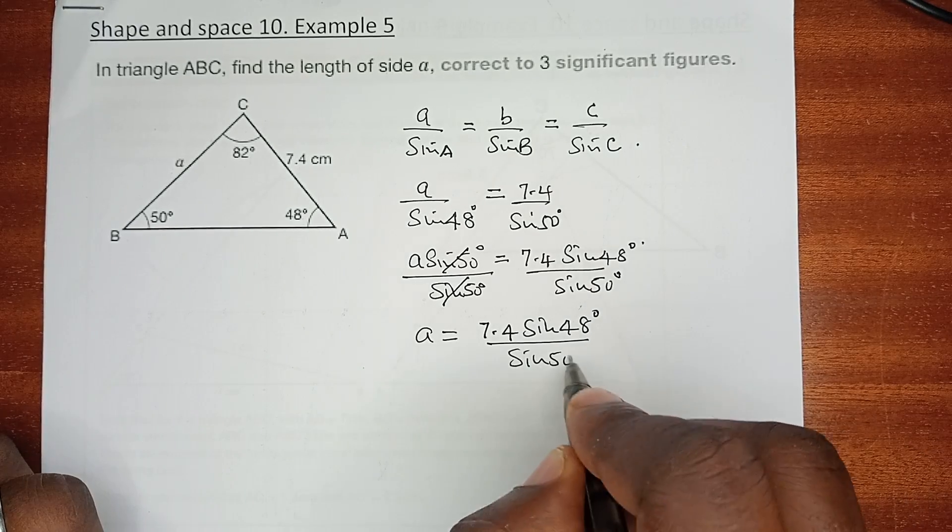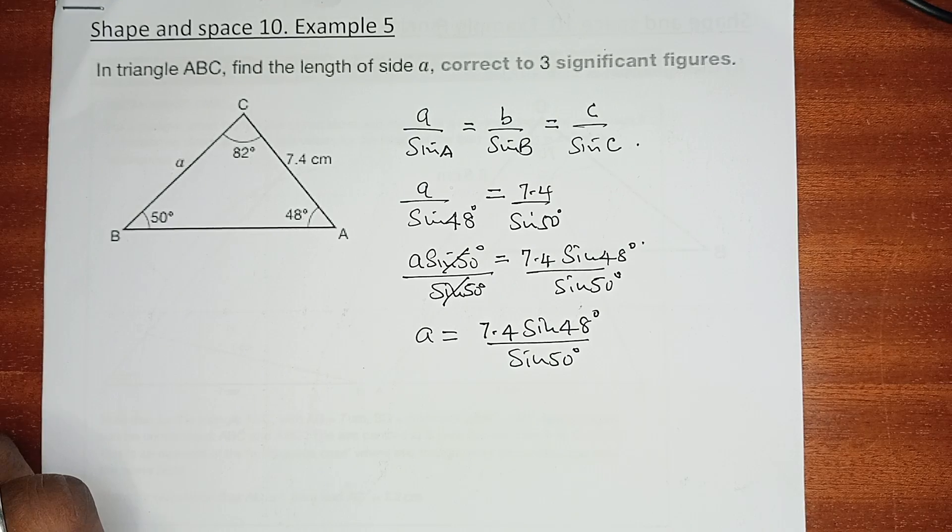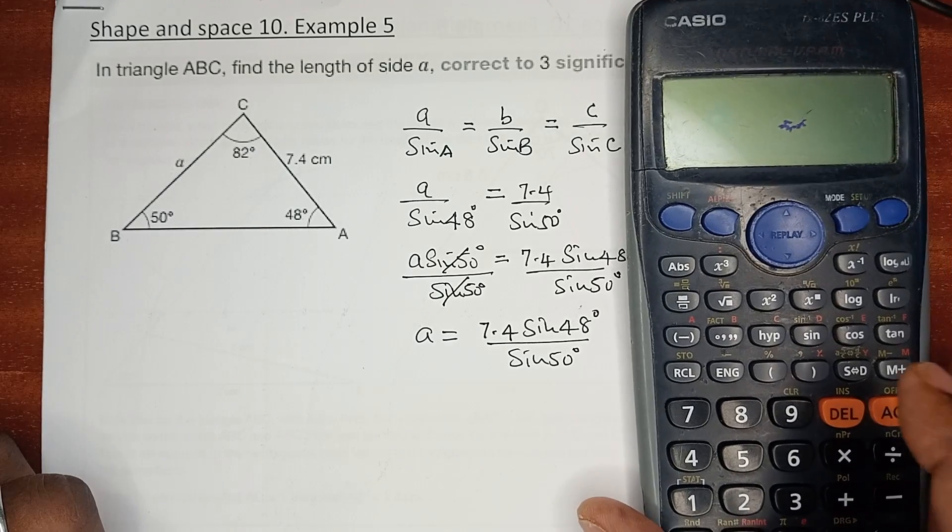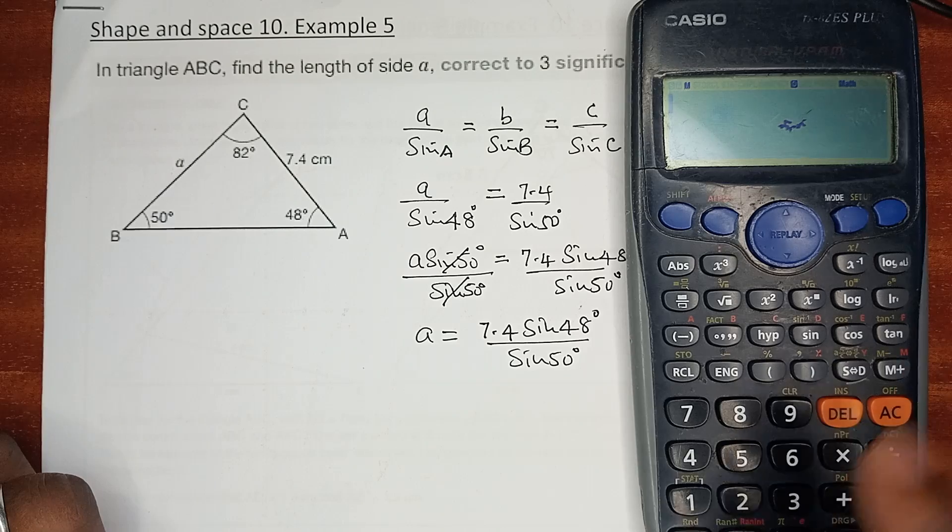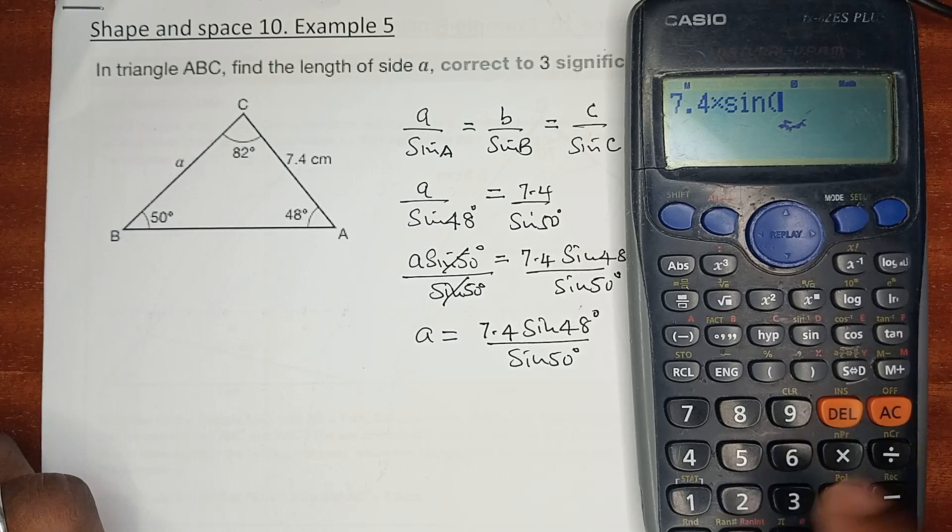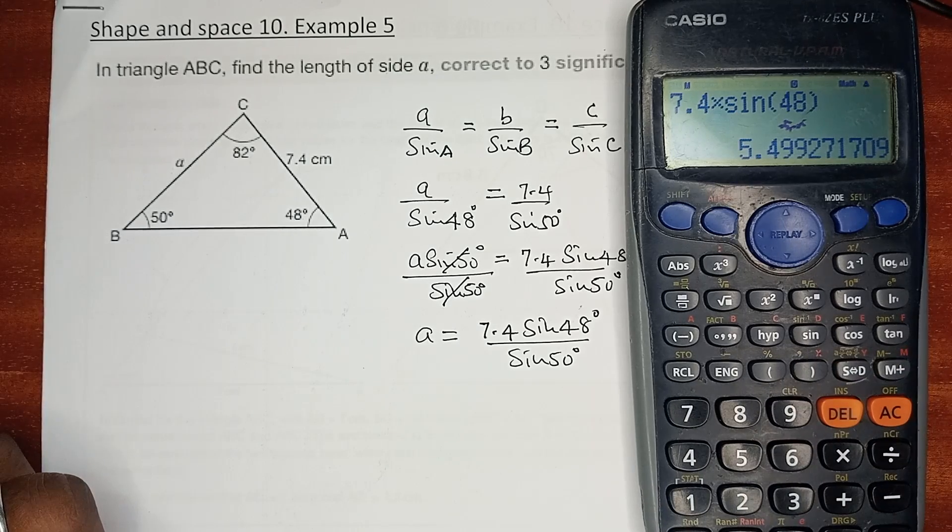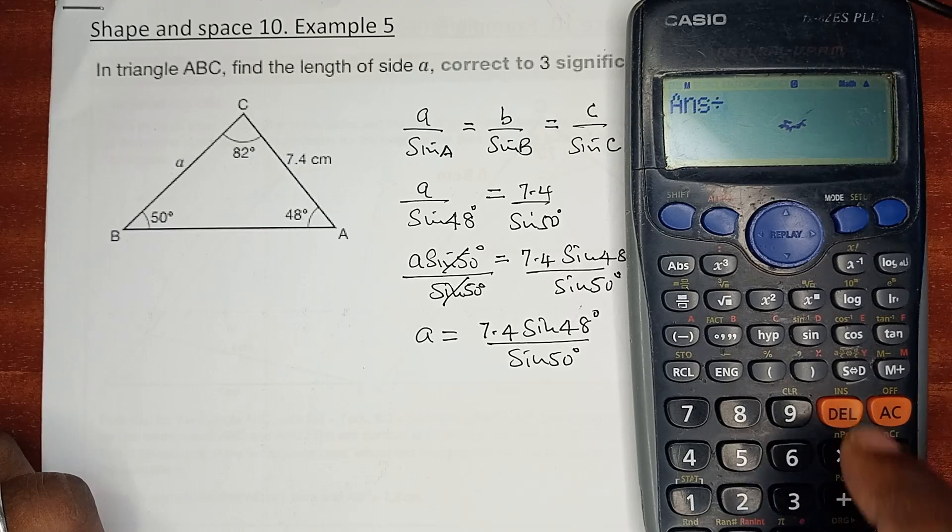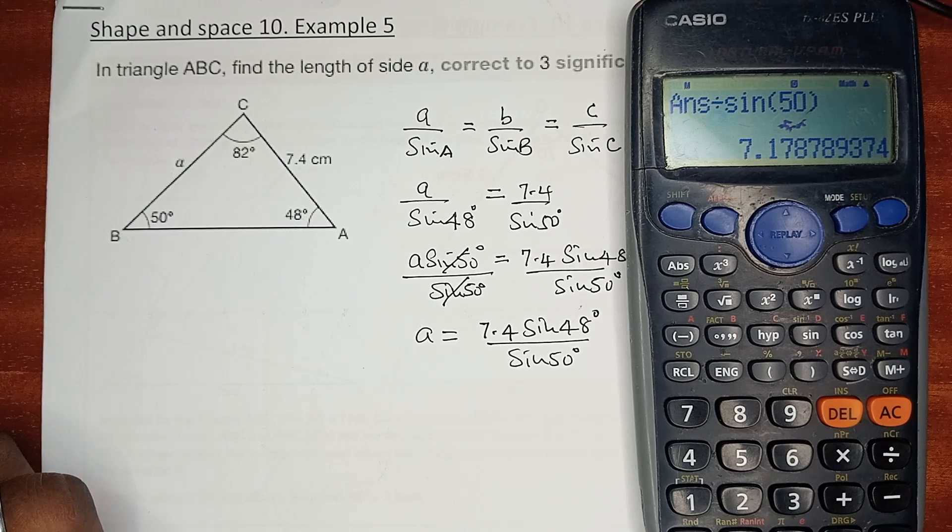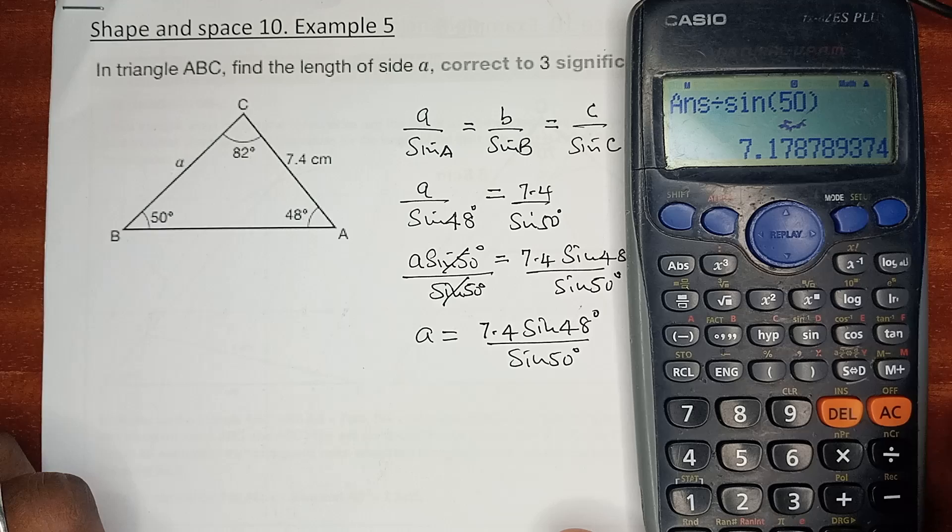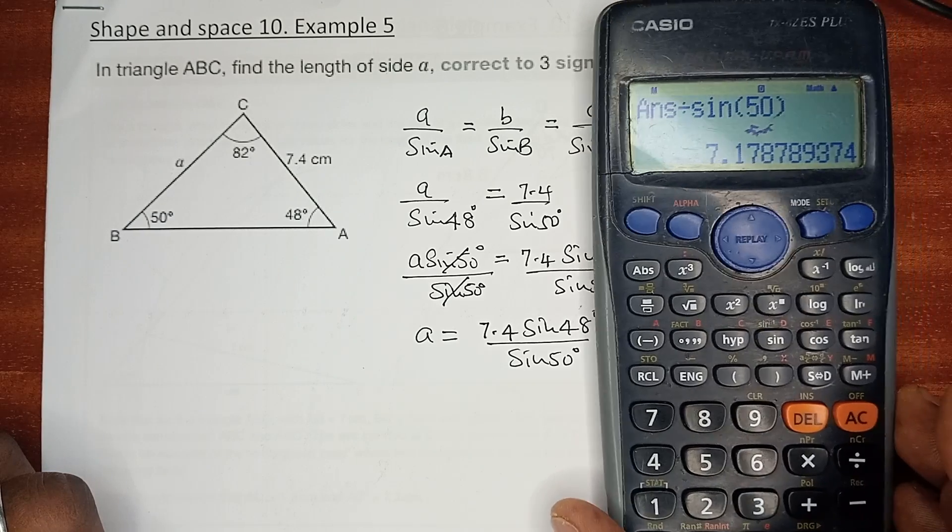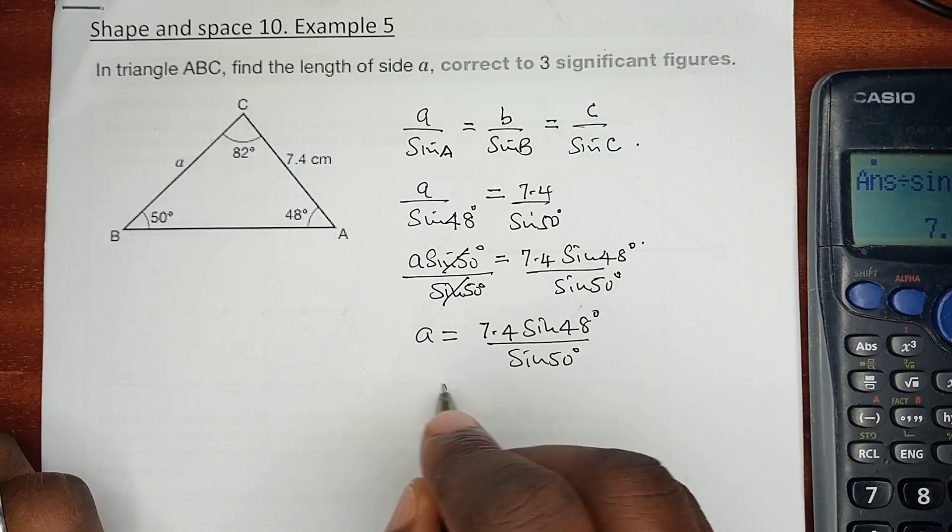At that point we just want to employ the calculator and see what happens. Now, 7.4 times the sine of 48 degrees, which is equal to that, you divide by the sine of 50 degrees, you get 7.17178 centimeters.